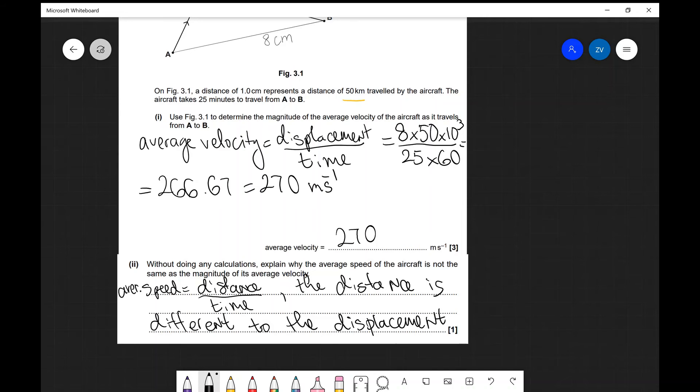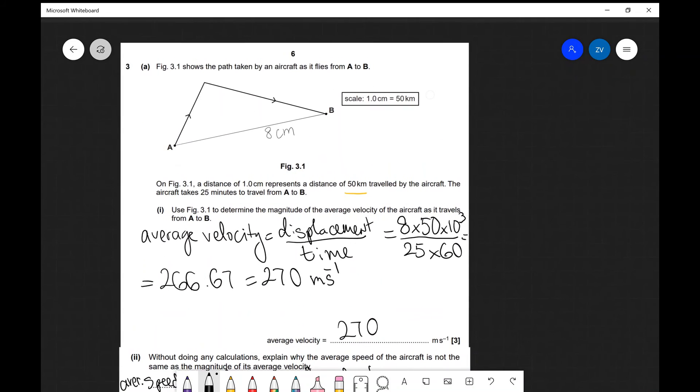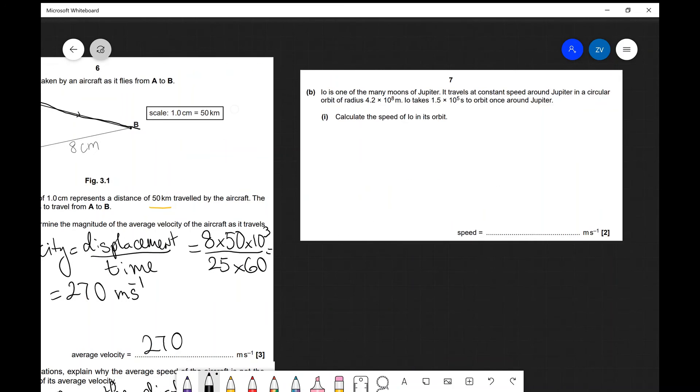If the two had the same magnitude then that would be the case however in this case that is clearly not the case because the distance is going to be this length multiplied by this length over here which is going to be very different from 8 centimeters.